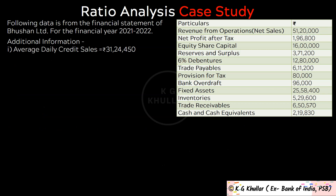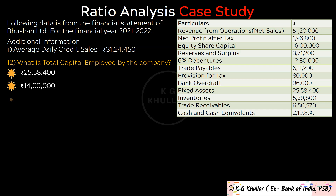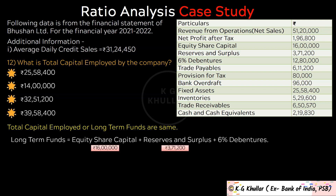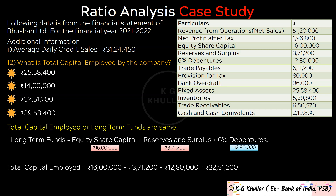The next question is: What is total capital employed by the company? Please note total capital employed and long term funds are the same. In the given case study, long term funds are equity share capital plus reserves and surplus plus 6% debentures, that is Rs. 16,00,000 plus Rs. 3,71,200 plus Rs. 12,80,000 equals Rs. 32,51,200. The correct option is option C.